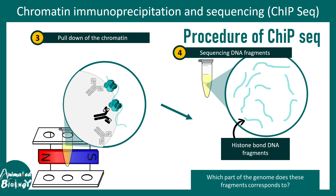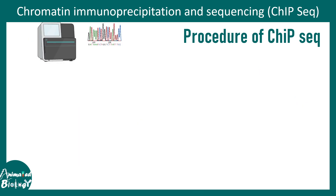So let's say H3K9 acetylation binds to which portions of the DNA in the entire genome. After the pull down step, we are left with specific DNA fragments, which can be detected using high throughput sequencing methods. Each of these DNA sequences would be of different size, and these sequences are known as reads.